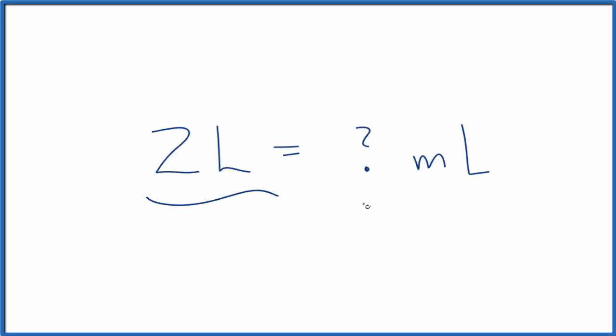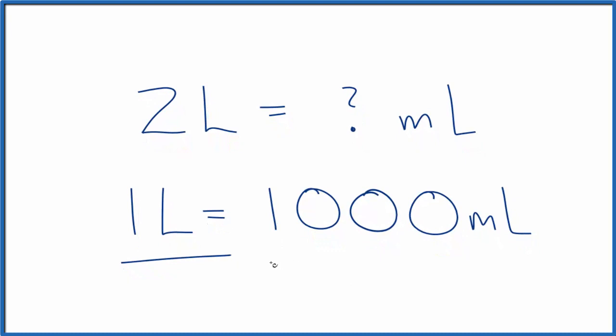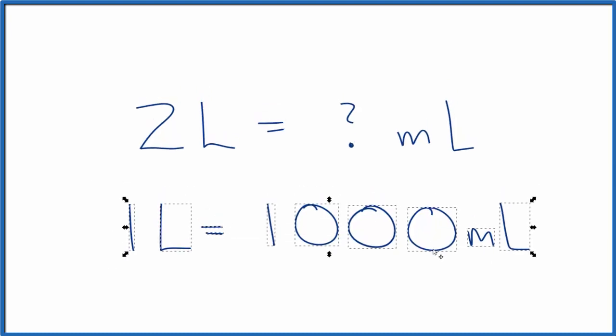Let's convert two liters to milliliters. To do this, we need to know a conversion factor, and the conversion factor is one liter equals 1,000 milliliters. This is something that you just memorize. So one liter equals 1,000 milliliters. We're going to call that our conversion factor.